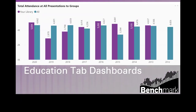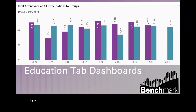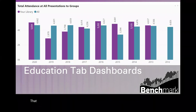Here we're looking at total attendance at all presentations to groups — just one of many dashboards in this tab. It shows how your library compares to other academic libraries, calculating the mean value for all libraries you've chosen for comparison. If you apply no filters, the default display includes all libraries that responded to the most recent survey, which in this case is 2020. Most of you will want to filter by your Carnegie class, detailed Carnegie class, or peer groups.